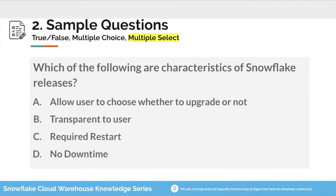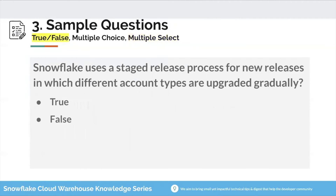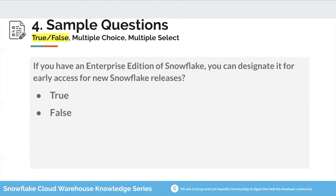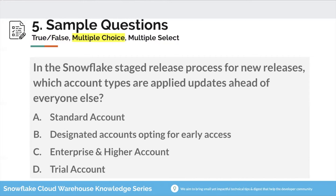Question 2 is a multiple-select question — more than one correct answer. During the exam, Snowflake will tell you how many answers are correct. Which of the following are characteristics of Snowflake releases? Options: allow users to choose whether to upgrade or not; transparent to users; requires restart; no downtime. Question 3: Snowflake uses a staged release process for new releases in which different account types are upgraded gradually — true or false? Question 4: If you have an Enterprise Edition of Snowflake, you can designate it for early access for new Snowflake releases — true or false? Note: this is a single-answer multiple choice, not multiple select.